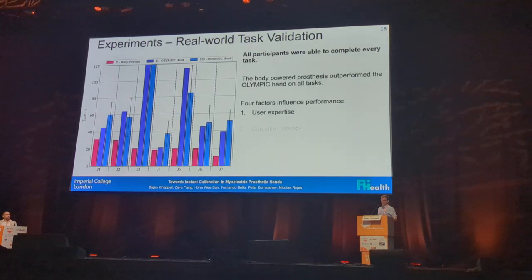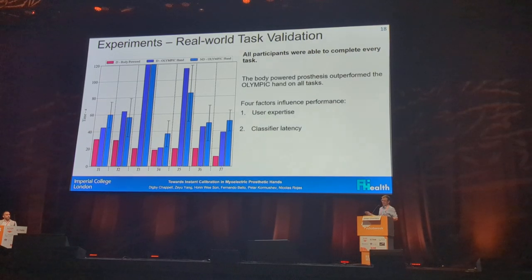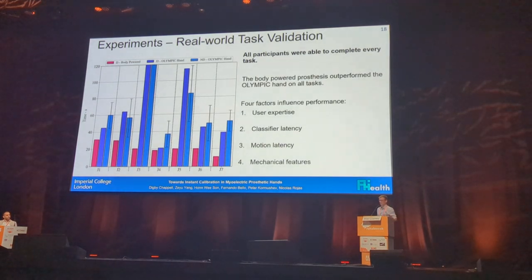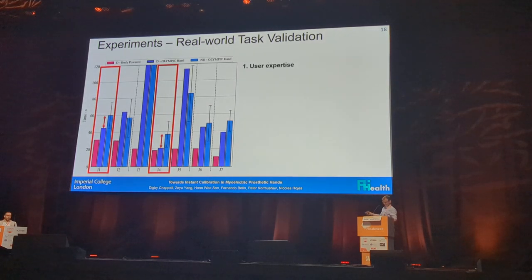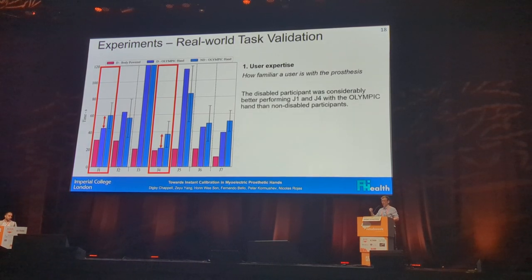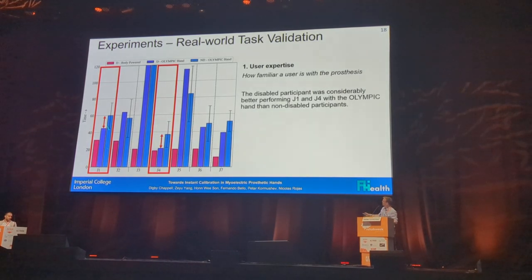The first factor is user expertise — what skills they can transfer from their body power prosthesis to the Olympic hand. The second is classifier latency — how long it takes to classify a pattern of muscle activity. In tasks like writing and feeding where you have to hold the object in a static grip, that transfers easily and the disabled participant actually performed better than non-disabled participants.